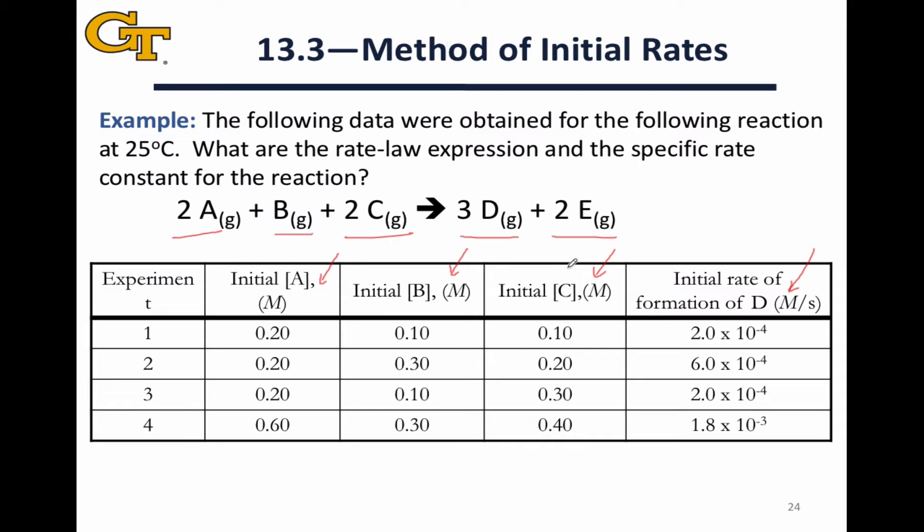Since C is never held constant, it's probably a good idea to start there in terms of determining reaction order, because we're not going to be able to find an experiment where the concentration of C is controlled. So I'm going to start there and look for two runs where the concentrations of both A and B remain constant. Based on our cursory glance through the table, we can see that in experiments one and three, we have 0.2 moles per liter for A and 0.1 mole per liter for B in both trials. And we can see that the concentration of C triples in going from experiment one to experiment three.